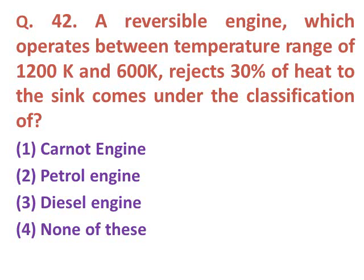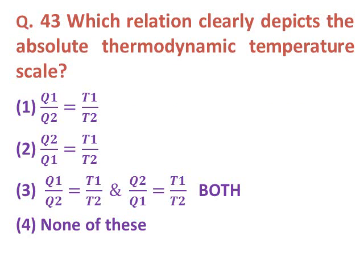Question forty-two: A reversible engine operates between temperature range of 1200 K and 600 K and rejects 30% of heat to the sink. Under which classification does it fall? Option one: Carnot engine. Option two: petrol engine. Option three: diesel engine. Option four: none of these. Since efficiency is 70%, which no standard engine achieves, the correct answer is option four — none of these.